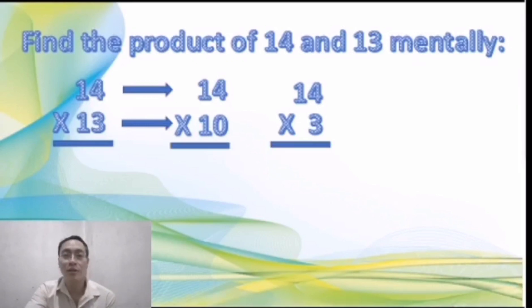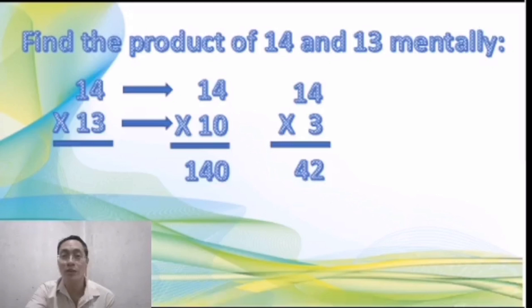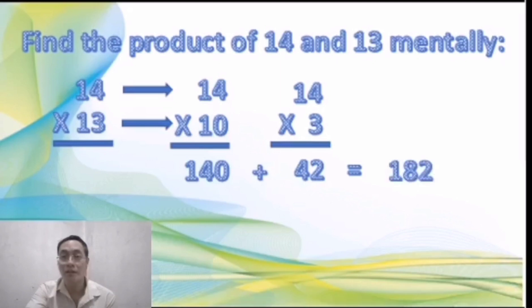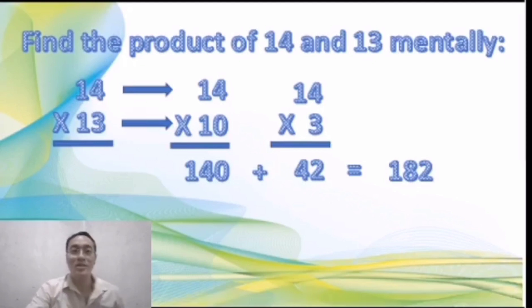So get the product of 14 times 10, which will give you 140, and 14 times 3 will give you 42. So on your mind, add the two partial products: 140 plus 42 will give you 182. It's faster to compute in your mind when you know the technique.